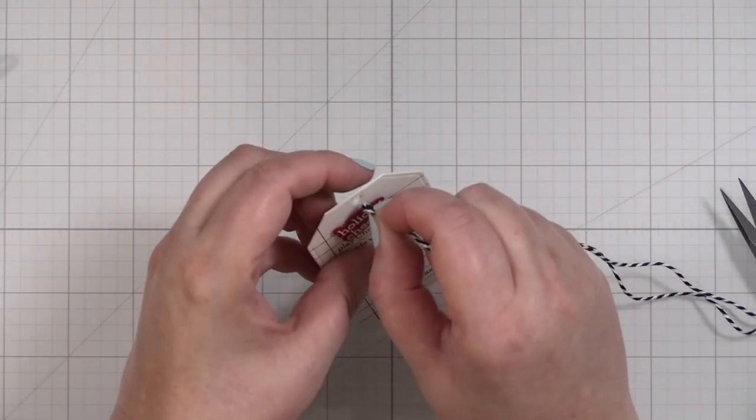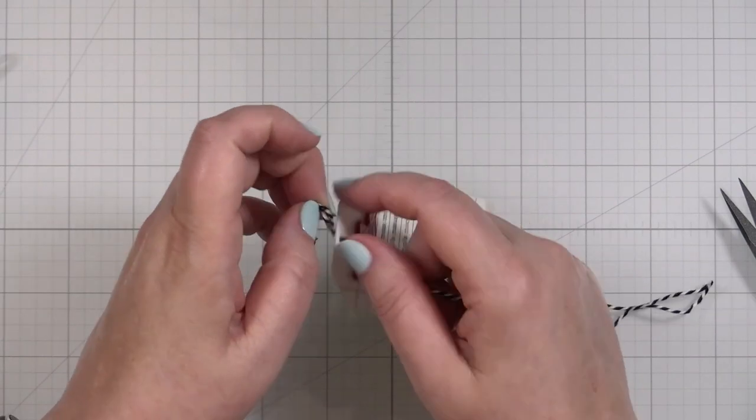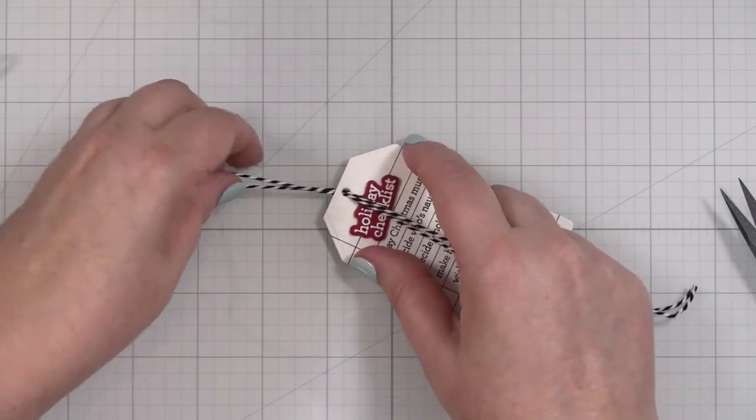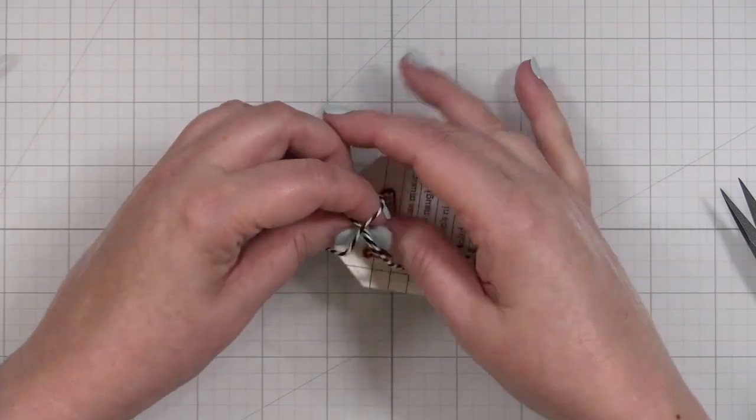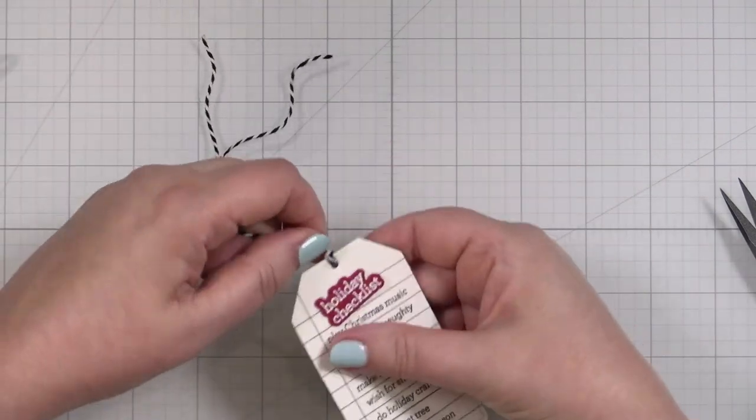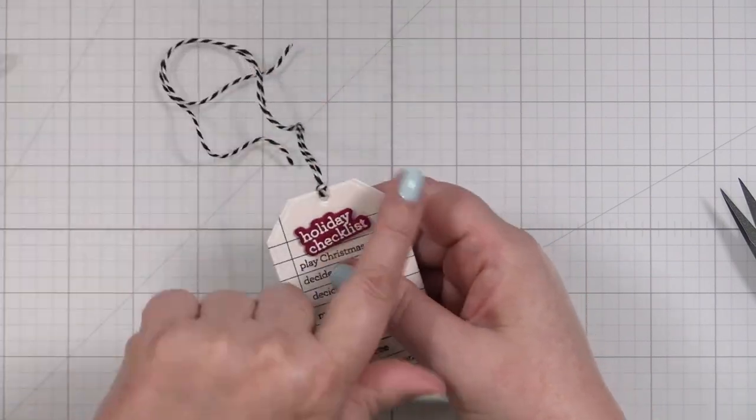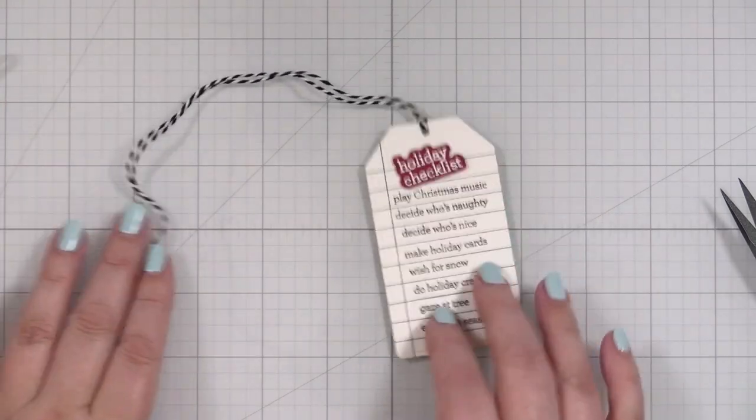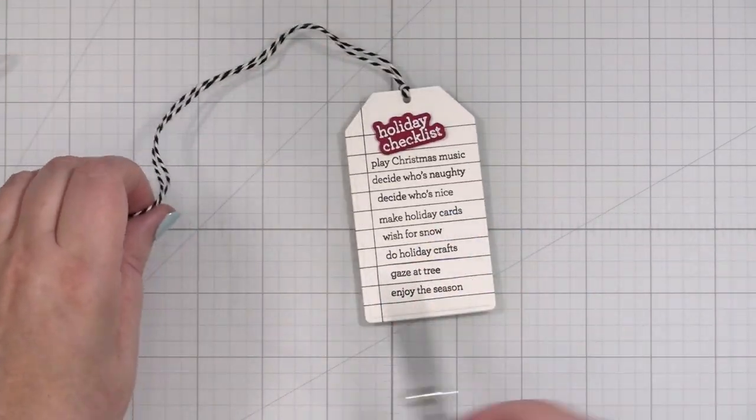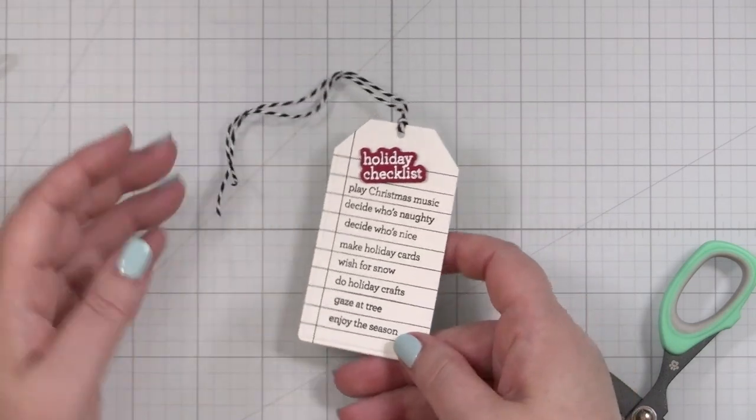Then I'll just run some black and white twine here, this baker's twine through. I am one of these people that likes to go in through the front of the tag, create my loop, and go like that because then you get that nice little loop over in the front. Then, of course, I can tie this down any way I like. That's my finished tag project.